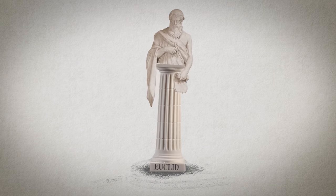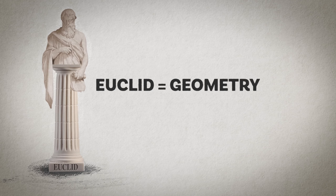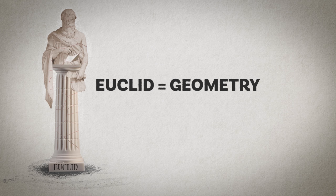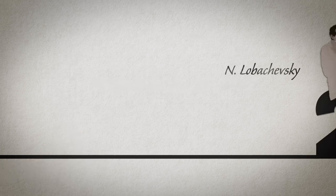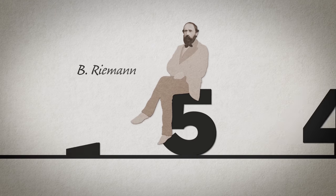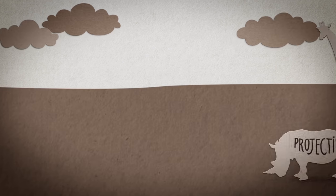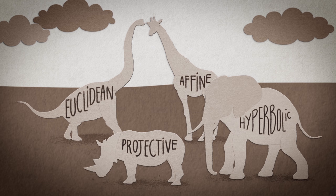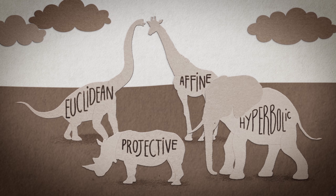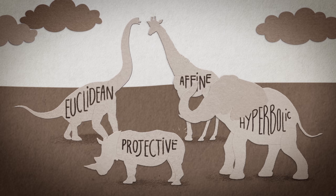For almost 2,000 years the word geometry was synonymous with Euclidean geometry, simply because no other types existed. Euclid's monopoly came to an end in the 19th century when Lobachevsky, Boyai, Gauss, Riemann and others constructed the first examples of non-Euclidean geometries. Together with projective geometry, an entire zoo of different geometries emerged, with mathematicians debating which geometry is the true one and what actually defines a geometry.